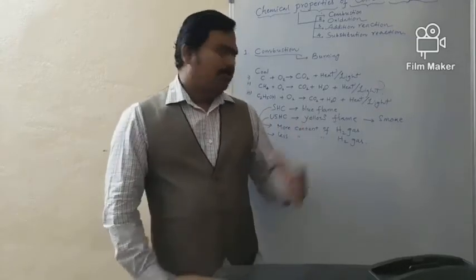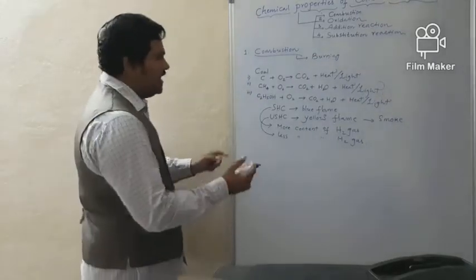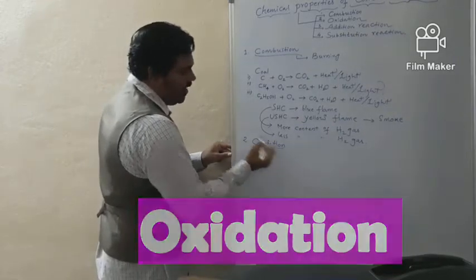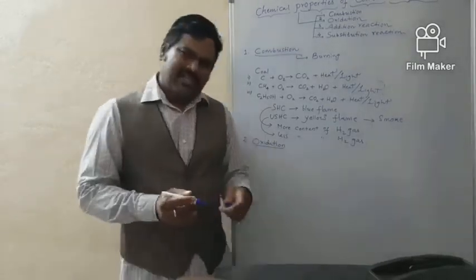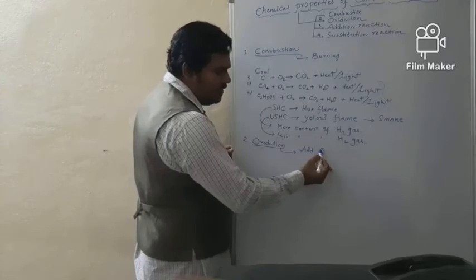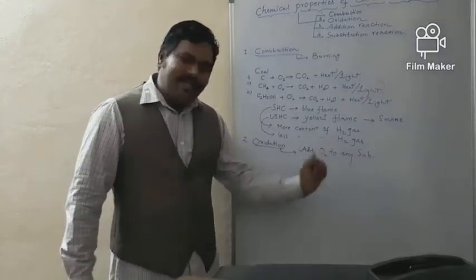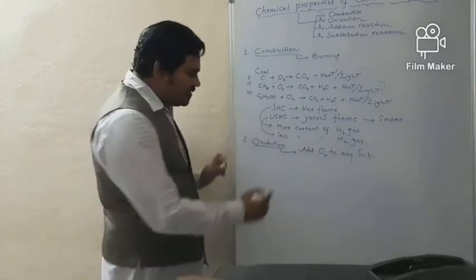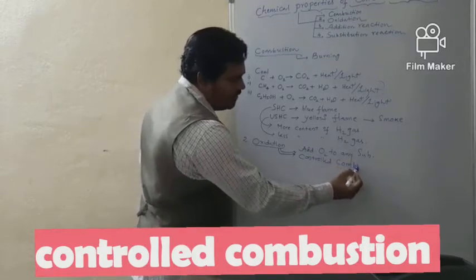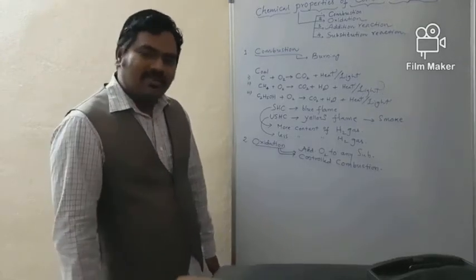Now coming to the second chemical property — oxidation. You have already learned this concept from chapter 1. Oxidation is the addition of oxygen to any substance. Oxidation is also called controlled combustion. Generally, this oxidation process is used to convert alcohols to carboxylic acids.